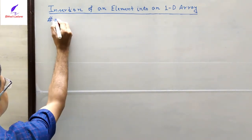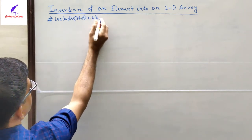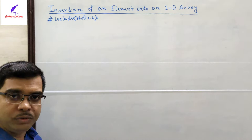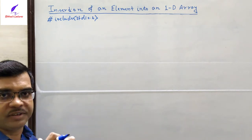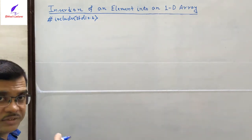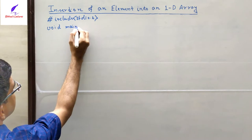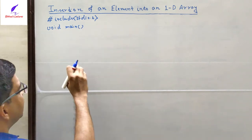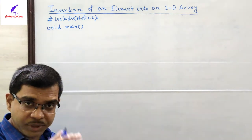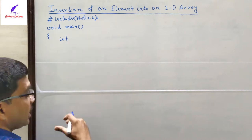First we declare the header file: #include stdio.h. This is the standard input/output header file. We include it because we are going to call system-defined functions like scanf and printf, which are written in this header file — we take permission from the system by including it. Now we define the main function. The return type of main is void, meaning after doing its job it will not return any value.